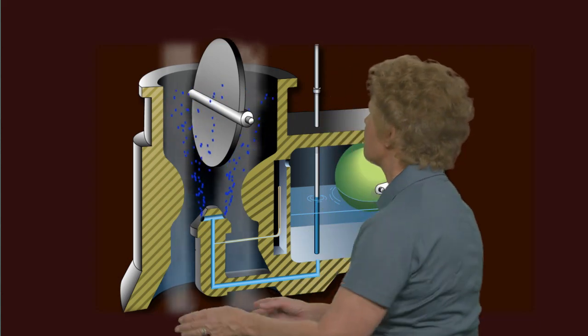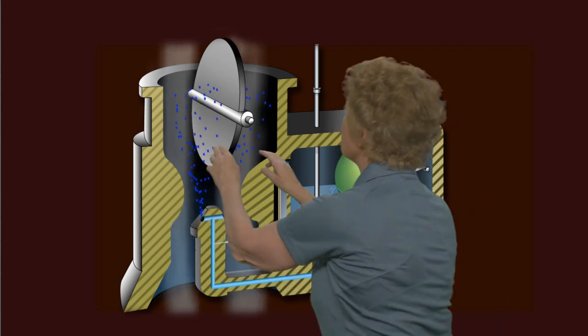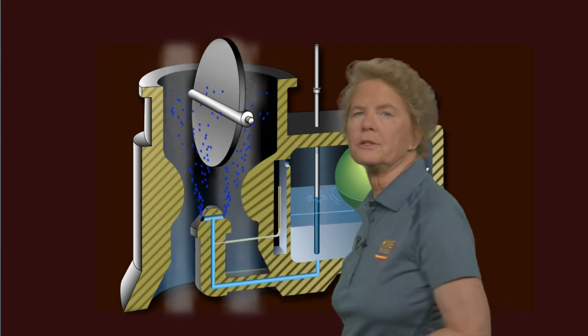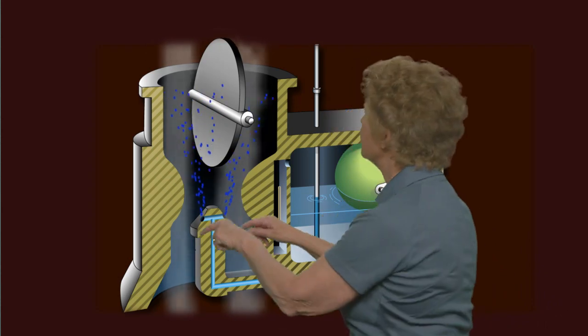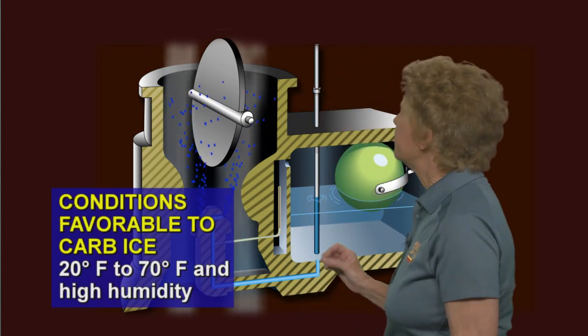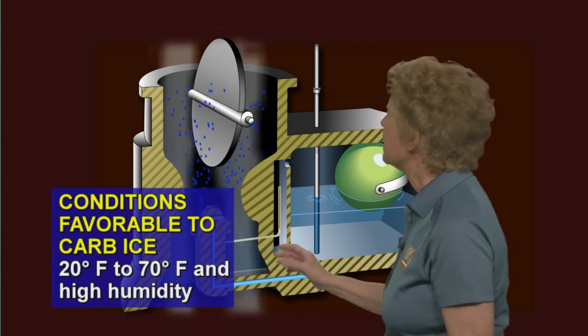Now carburetors are susceptible to icing conditions. When the air goes through the carburetor, it has a considerable temperature drop because of the fact that it accelerates and it expands. You can get a temperature drop of as much as 50 degrees Fahrenheit as the air moves through the carburetor. The conditions favorable to the formation of carburetor icing are a temperature between 20 and 70 degrees Fahrenheit and high humidity.